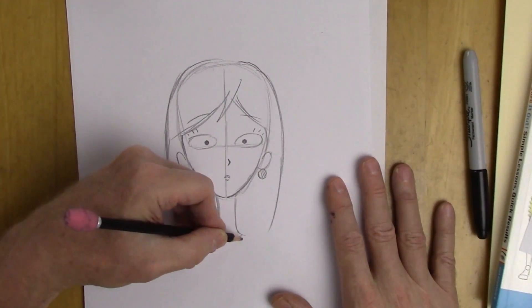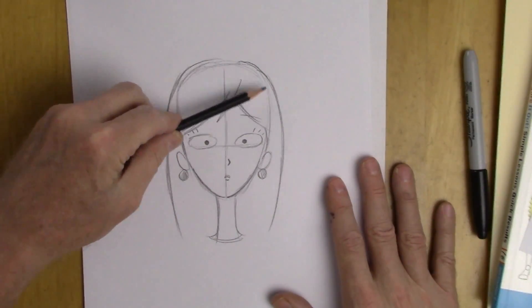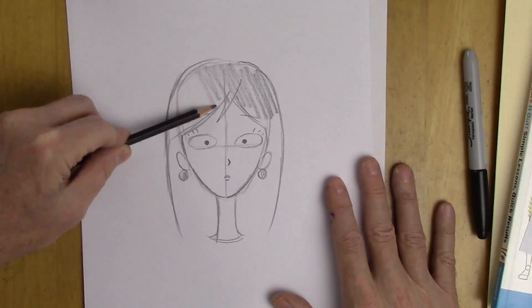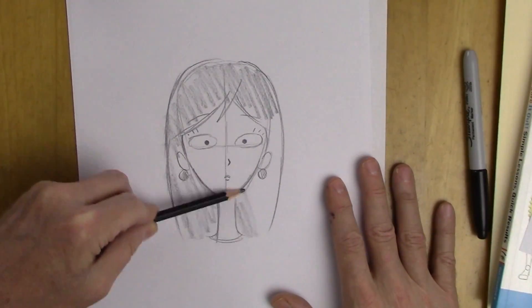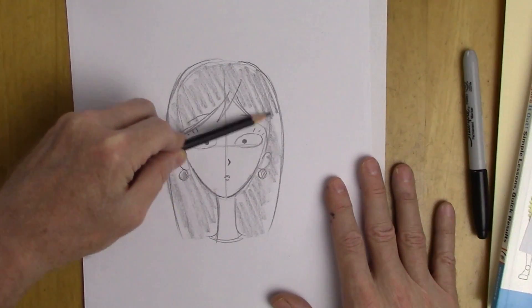And we'll just give her a collar right here. And we'll just shade this in. And you see with just a few lines, we have created quite an exaggerated character.